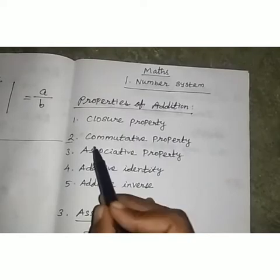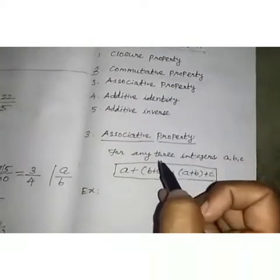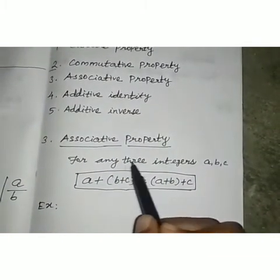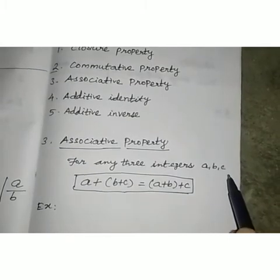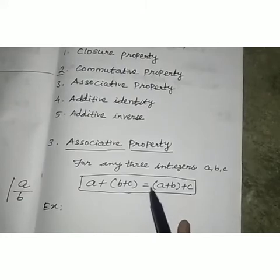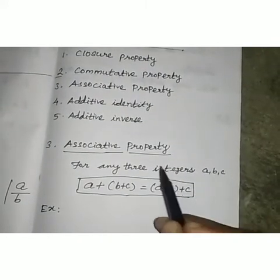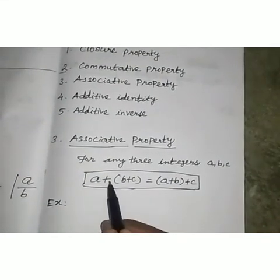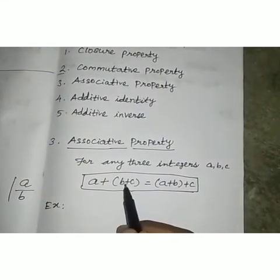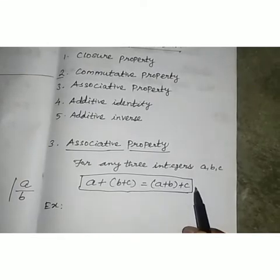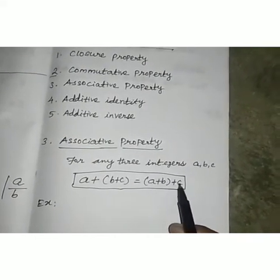Now we see the associative property. What is meant by associative property? For any three integers a, b, c: a plus (b plus c) equals (a plus b) plus c. So we take any three integers a, b, c — the bracket inside b plus c equals the bracket inside a plus b, plus c.